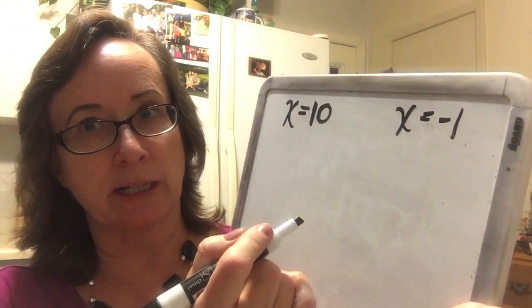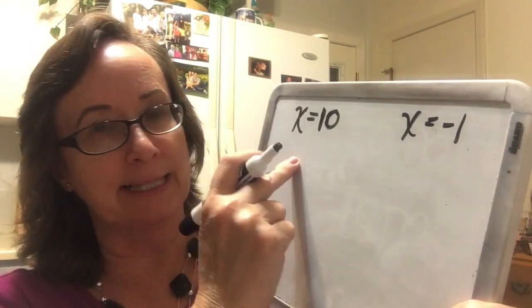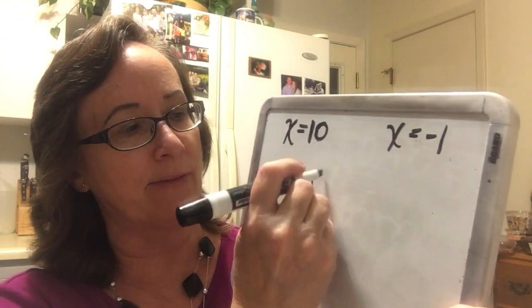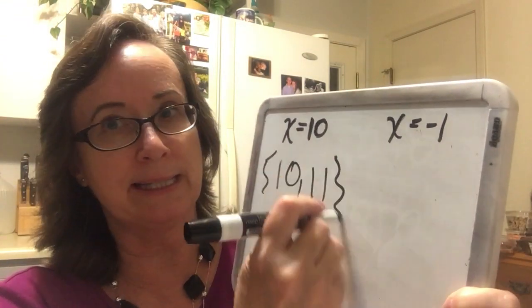Remember these are consecutive integers. So if x is 10, that means x plus 1 is 11, and 10 and 11 is one set of integers.